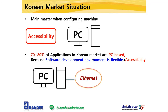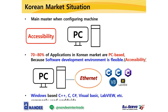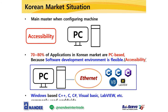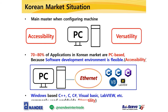In addition, the most widespread software development environment in the world is PC and Windows-based, supporting C++, C, C#, Visual Basic, LabVIEW, etc., which can be used commonly. Thus it has good versatility. Therefore, Fastec's Ethernet products provide API for these programming languages, making them ideal for various customers' software development environments. When configuring the machine, Fastec's Ethernet products are used as a suitable solution in the Korean market where accessibility and versatility are important.